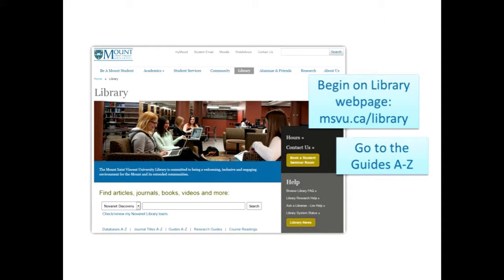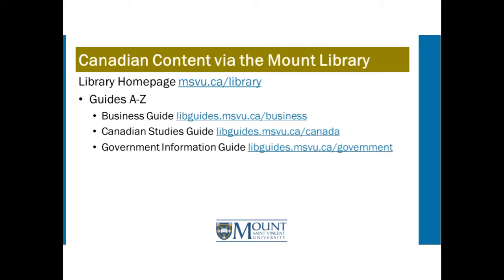We're going to start right on the library website and go down to Guides A to Z and look at a couple of guides that all have Canadian sections in them. The three big guides we'll be touching on are the Business Guide, the Canadian Studies Guide, and the Government Information Guide. Even if you're doing a business assignment, don't be afraid to use one of the other guides that might relate, because we do group things together. So if there's overlap with another topic, feel free to use that as well.